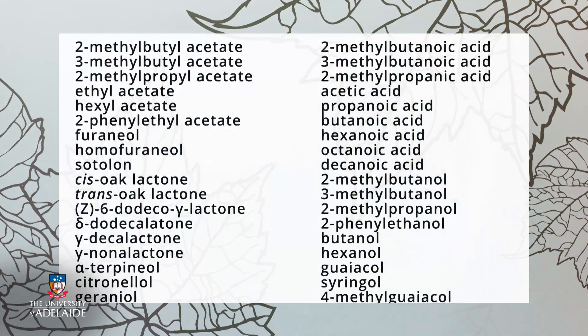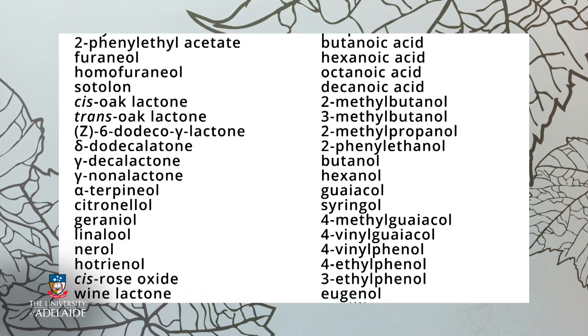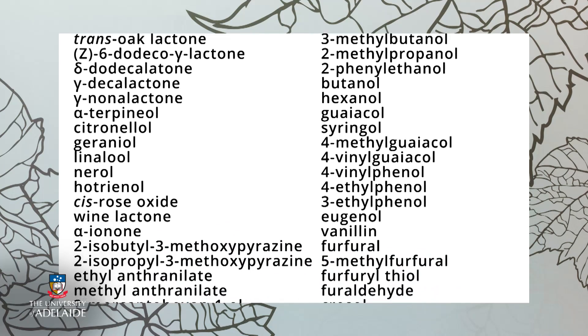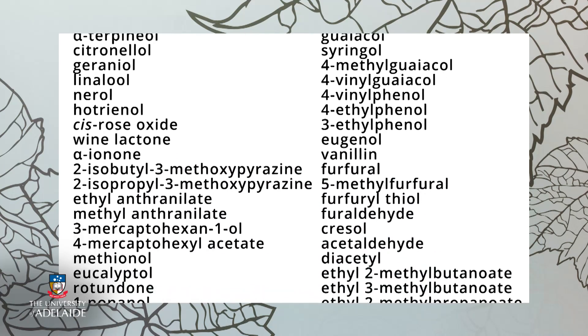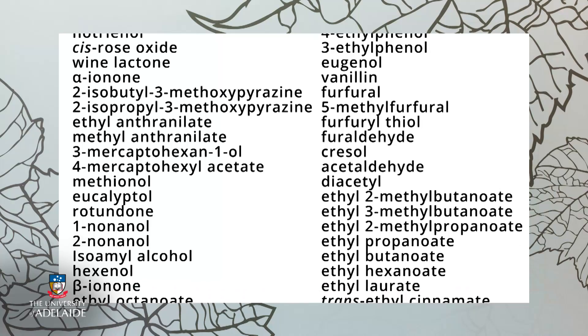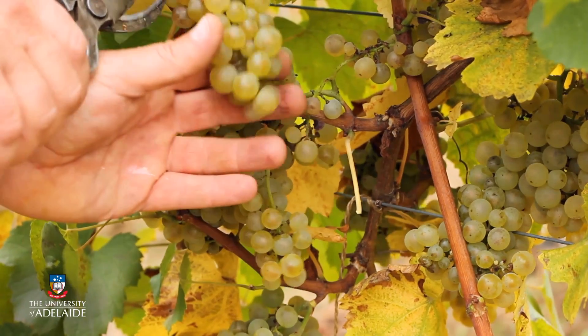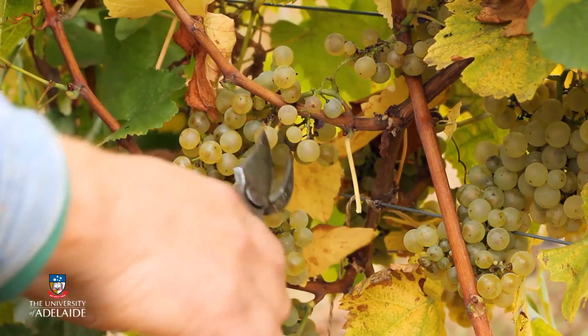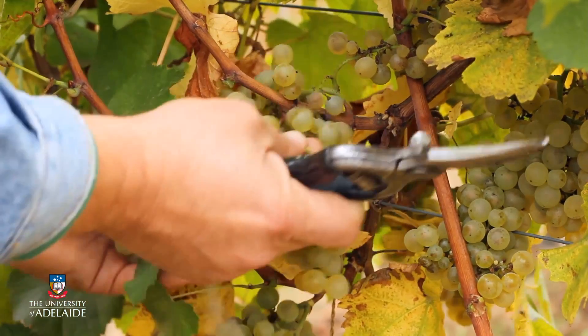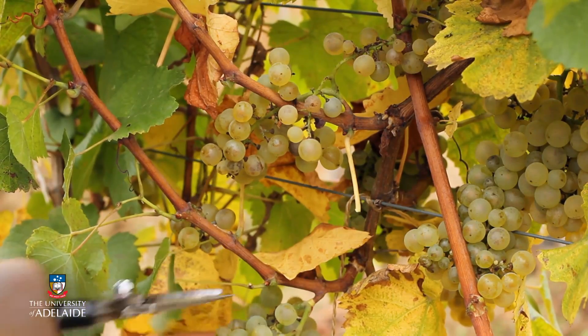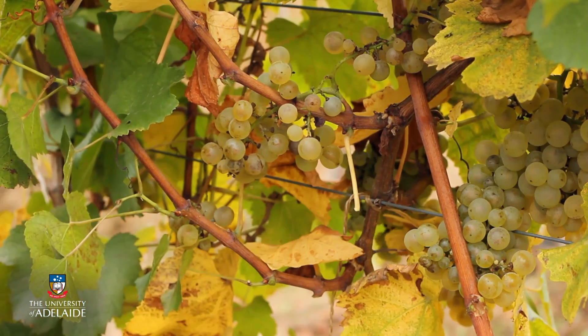The contribution of different volatile compounds to wine aroma has been the subject of considerable research. To date, several hundred individual volatile compounds have been identified in wine, each originating from several different pathways. Many of the volatile compounds present in wine are derived from the grape, and these are often responsible for the varietal character of particular grape varieties.